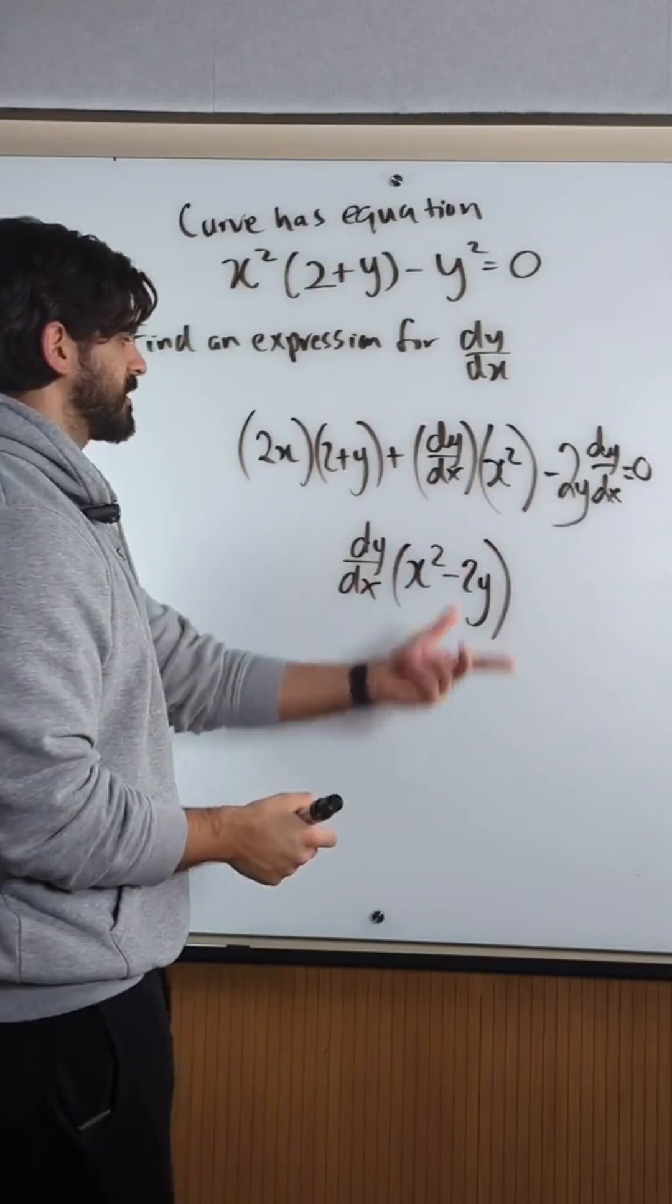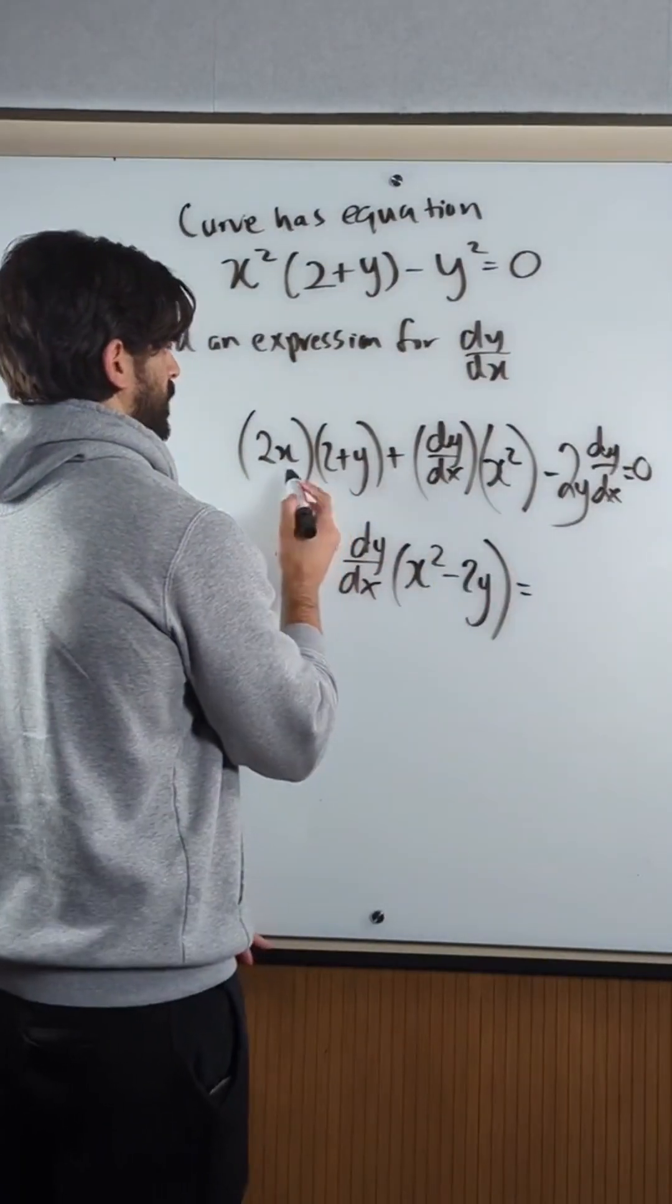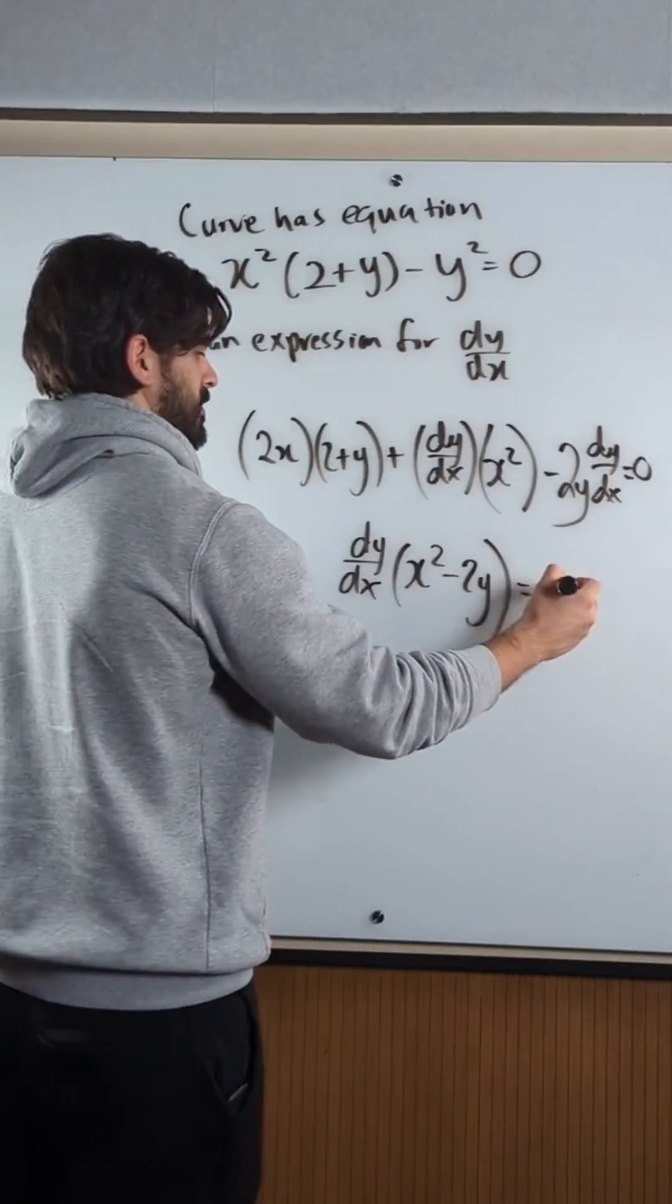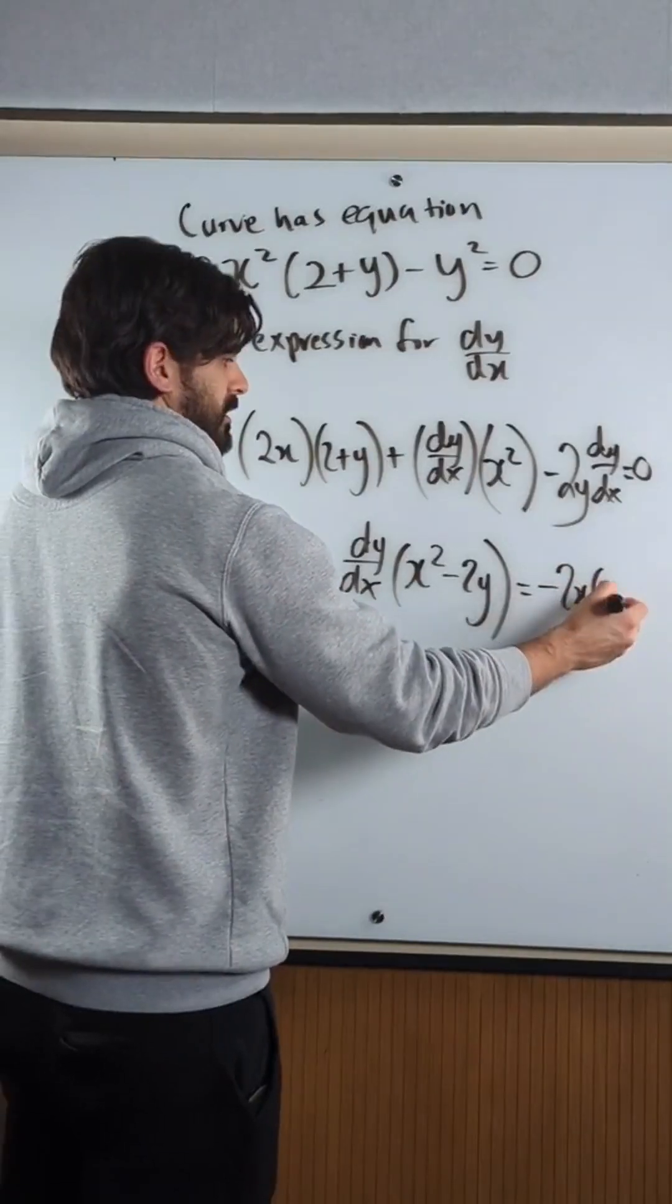This, I'll just move it to the other side, so I get - well it's 2x lots of this, so you get minus 2x times (2+y).